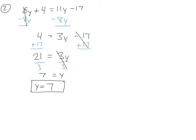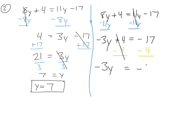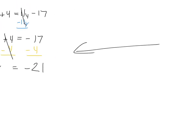But let's do it the other way. Rewriting 8y plus 4 equals 11y minus 17 — instead of subtracting 8y, let's subtract 11y from both sides. So 8y minus 11y: 8 minus 11 is negative 3, giving us negative 3y plus 4. And 11y minus 11y is 0, leaving us with equals negative 17.